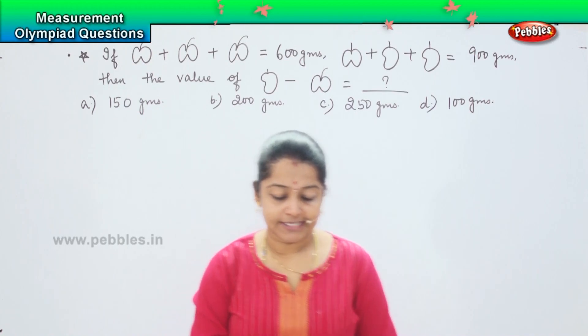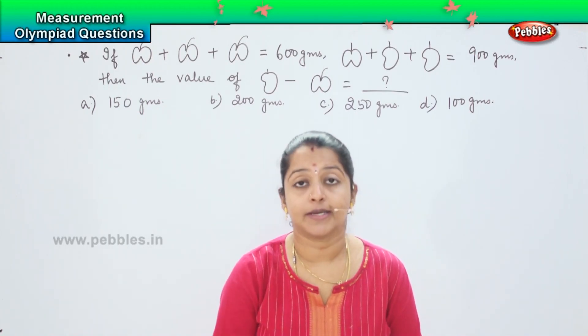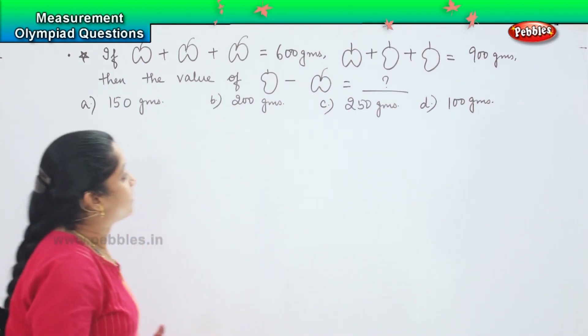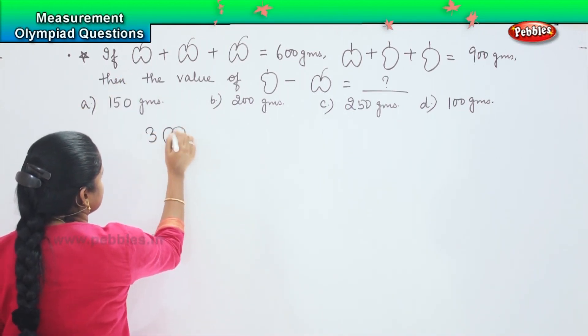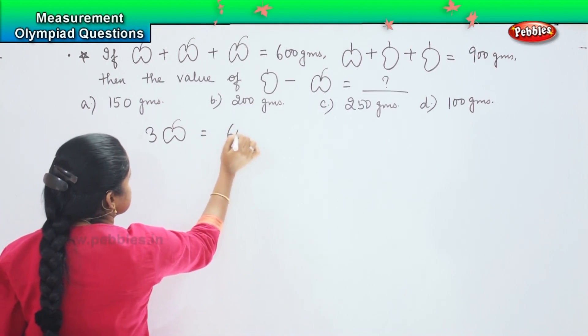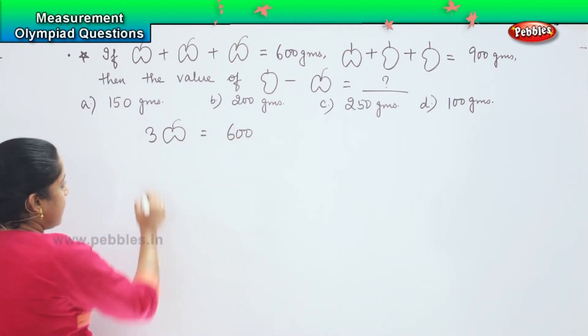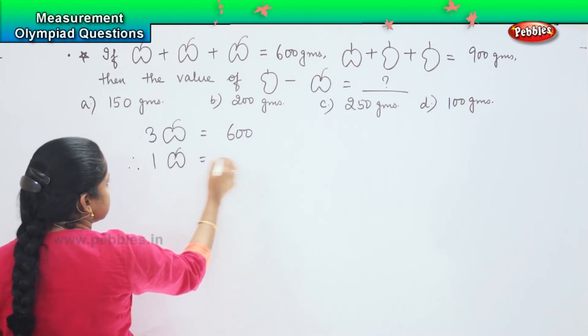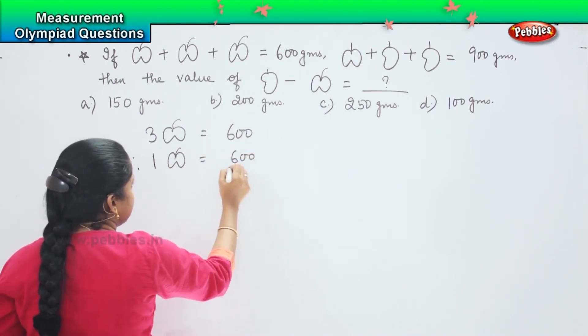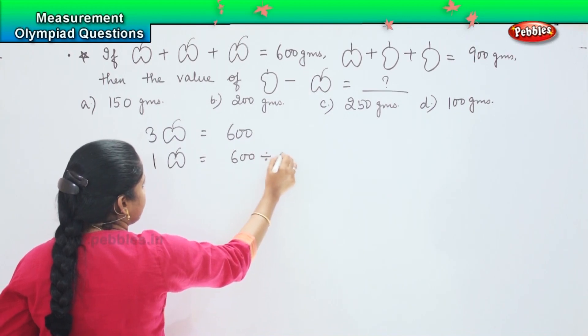It is the same pattern of questions which we did earlier, but here it is little twisted. So now, they have given me three apples equals 600 grams. So I need to find out the value of one apple which equals 600 divided by 3.